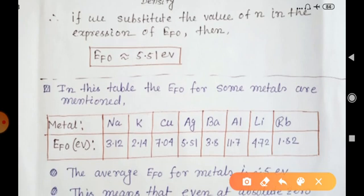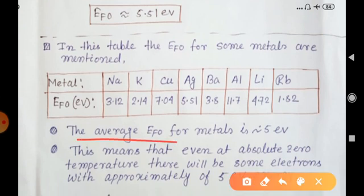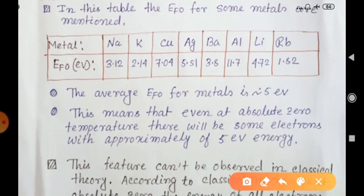A table lists Ef0 at absolute zero for several metals: sodium is 3.12 eV, potassium is 2.14 eV, copper is 7.04 eV, silver is 5.51 eV (as calculated), beryllium is 3.8 eV, aluminium is 11.7 eV, lithium is 4.72 eV, and rubidium is 1.82 eV. The average Fermi energy for metals is of the order of 5 eV, meaning even at absolute zero temperature there are electrons with approximately 5 eV of energy.